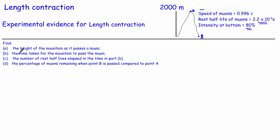We're going to imagine that we're sat with the muons — in the same rest frame as the muons. For us, the mountain is going to look like it's moving past us. We're going to work out the height of the mountain as it passes us when we're sat with these muons, then work out how long it takes for that to happen, then work out the number of half-lives that go past in that time, and therefore the percentage of muons at the bottom.